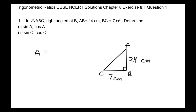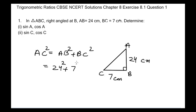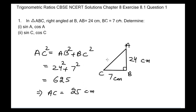We can use the Pythagorean theorem here and say that AC² = AB² + BC². Putting in the values of AB and BC, we get 24² + 7², which comes out equal to 625. Taking the square root on both sides, we get AC equal to 25 centimeters.